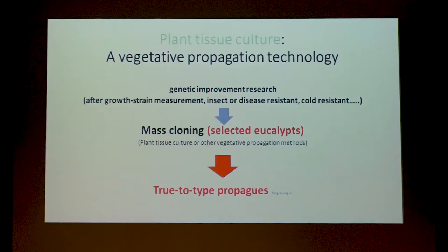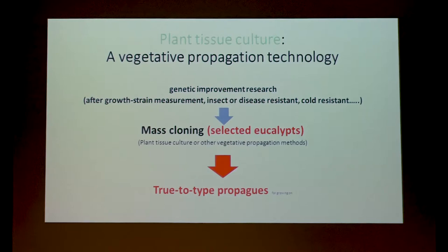To make an industry based on genetically improved trees — eucalypts that we are interested in — we need to mass clone those selected eucalypts. There is a really close relationship between genetic improvement research programs, whatever we are interested in — insect pest resistance, whatever — and we really need to think about vegetative propagation technologies. Whatever vegetative propagation methods the industry decides to use, it's really important that at the end of the day the industry has many, many copies of the same thing.